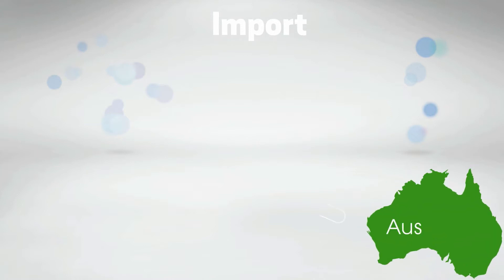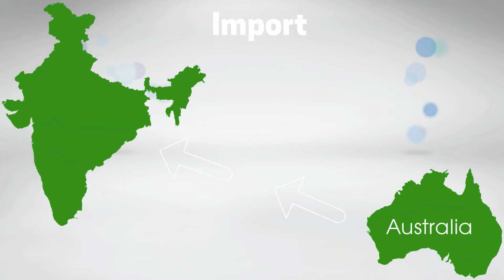In example number three, we'll discuss imports. If the manufacturer is located in Australia and he sells his goods to a consumer situated in India, then the tax will be collected by the Indian government as the place of final consumption is in India, which makes imports taxable.